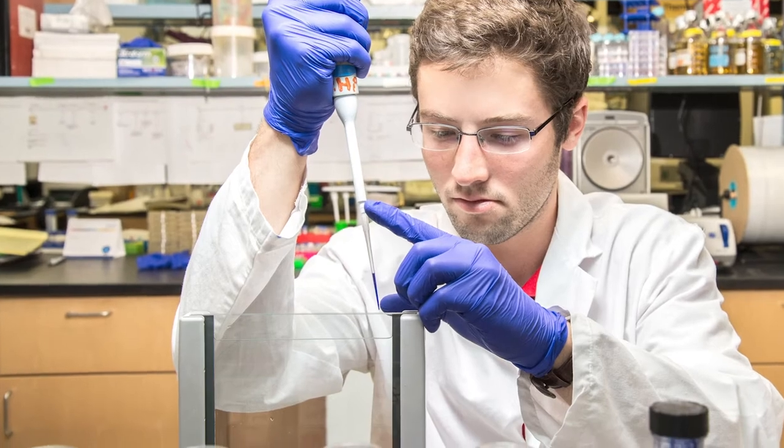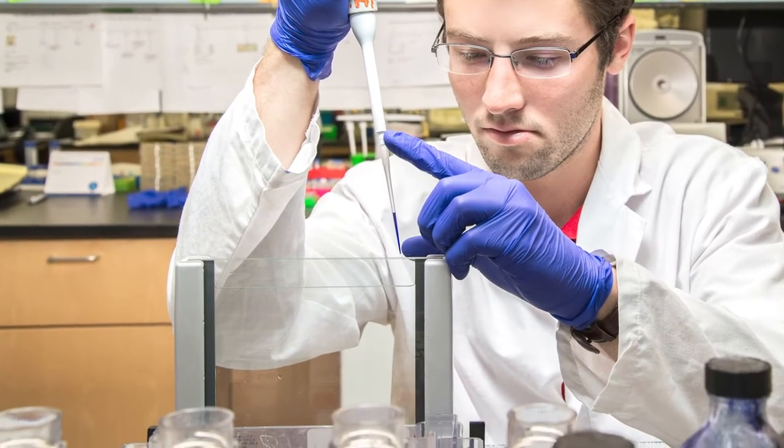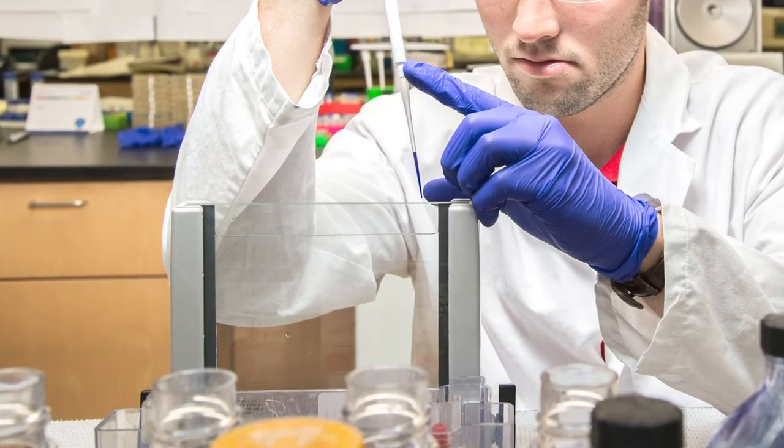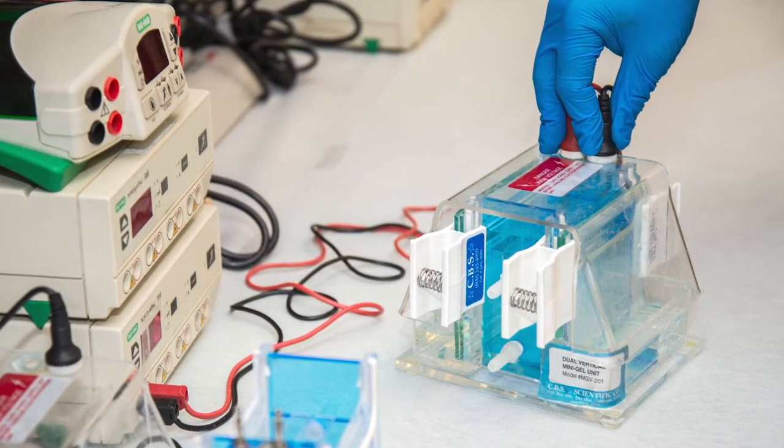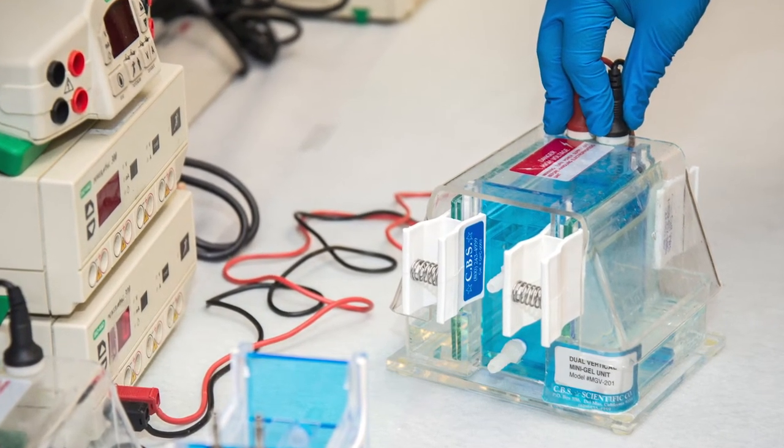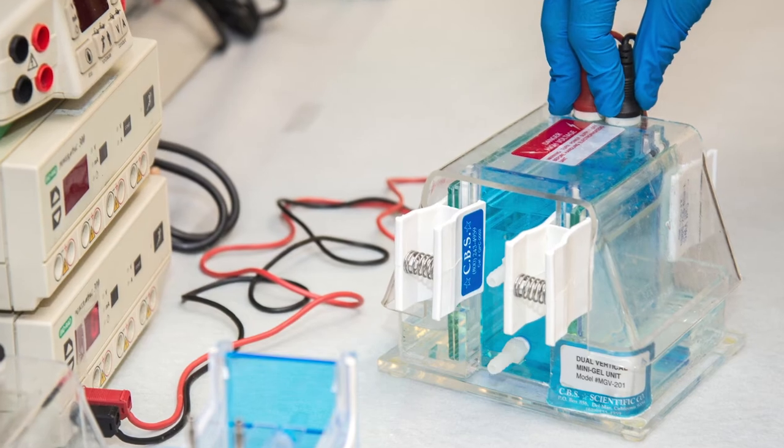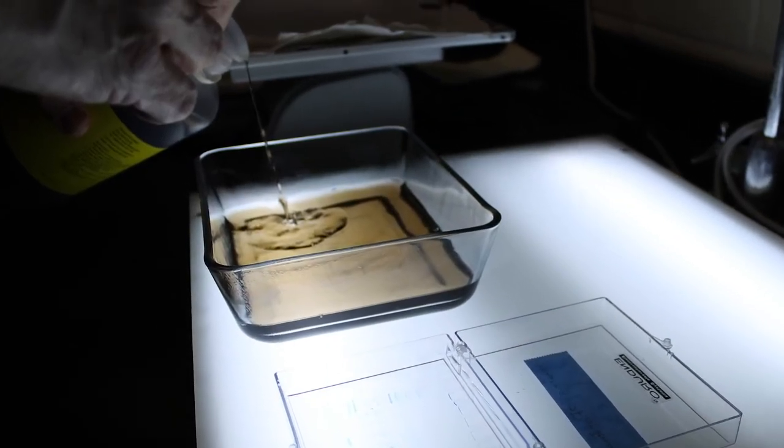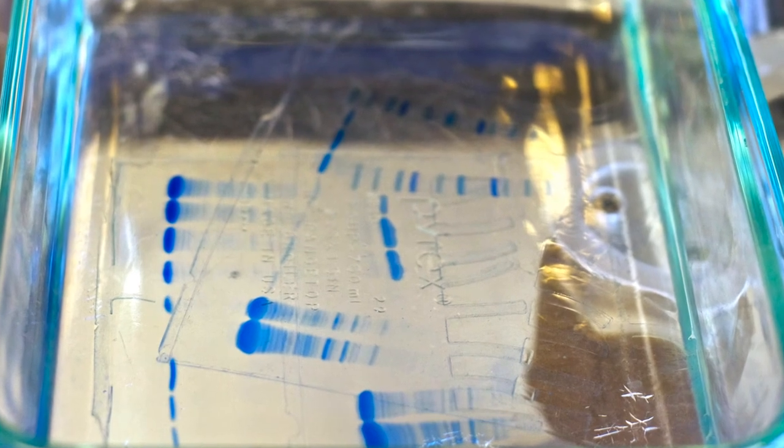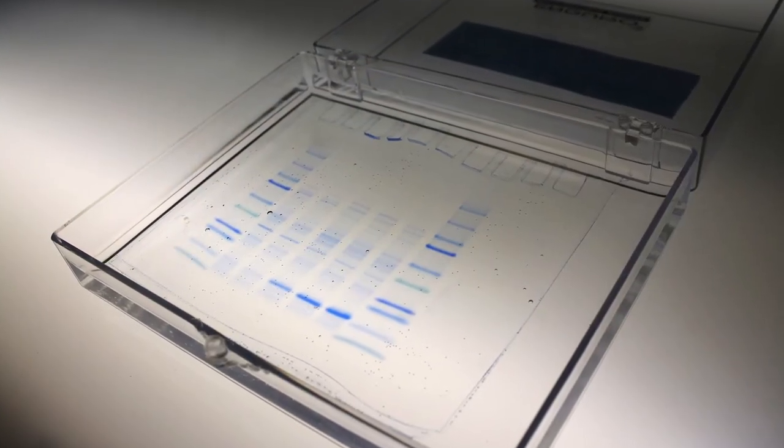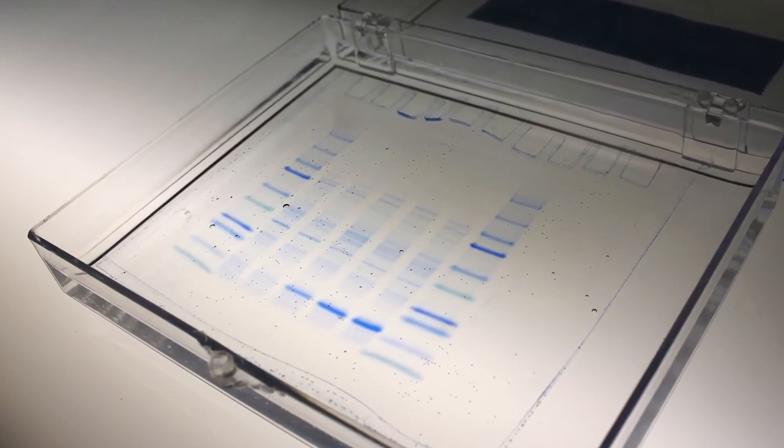Once you have completed the chromatography run, you will need to analyze the fractions to determine where your protein eluted, whether it is active, and how pure it is. These tests can vary, but most proteins can be analyzed for purity using sodium dodecyl sulfate polyacrylamide gel electrophoresis, or SDS-PAGE. We will discuss SDS-PAGE in a separate video.